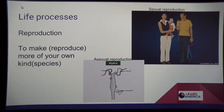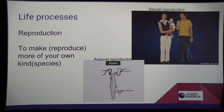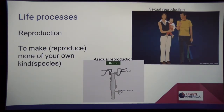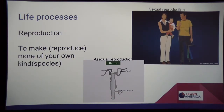Another life process is reproduction. Organisms must have the ability to make their own kind. If there's a question on basic reproduction, look for keywords such as 'reproduce' and 'own kind.' There are two types of reproduction: sexual reproduction, which involves male and female processes, and asexual reproduction, where one parent cell gives rise to a daughter cell as the offspring.